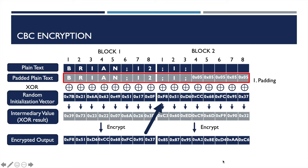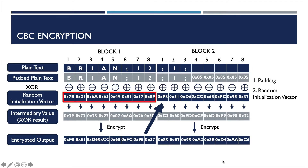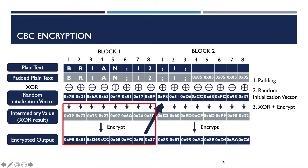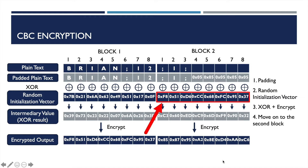Let's review it again. First, pad the plain text. Second, generate a random initialization vector. Third, XOR the padded plain text with the initialization vector to generate an intermediary value, and then let the machine encrypt the intermediary value. Fourth, the ciphertext of the previous block is used as the key in the next block to be XORed with the padded plain text.